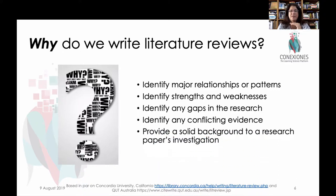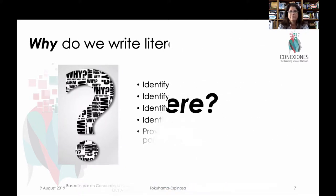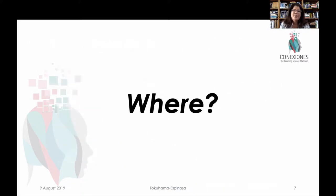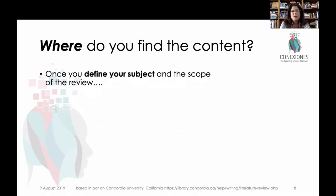The literature review gives you the foundation to explore your own research question. You establish what we already know so you can talk about what we don't yet know, and then what you think we now know — piecing together your interventions matched with the prior literature. So now that we know why we do the literature review, where do we begin? Where do we get the information? Once you've defined the subject and research question, you can begin a search.